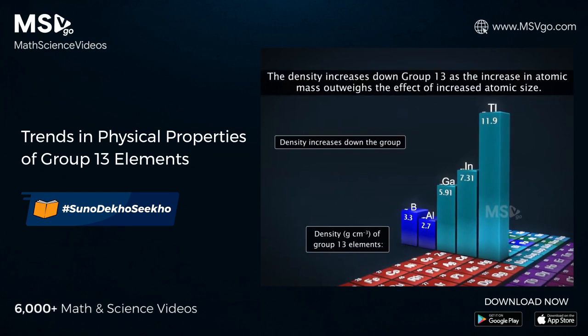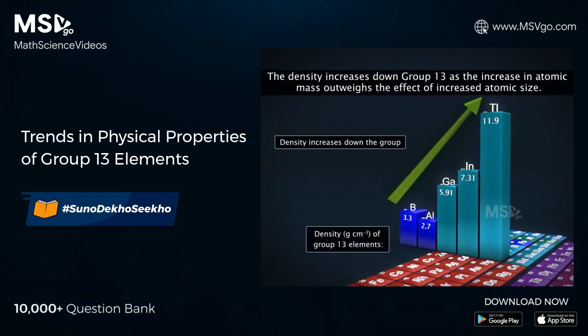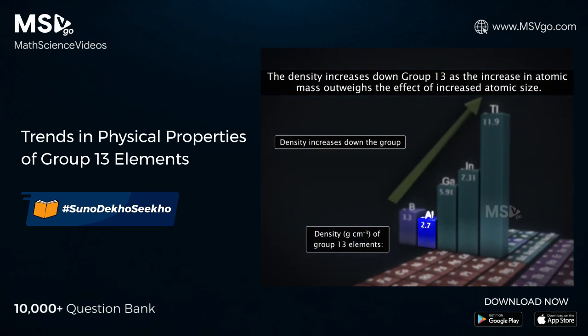On moving down the group, the densities increase as the increase in atomic mass outweighs the effect of increased atomic size. Aluminium is an exception which has low density.